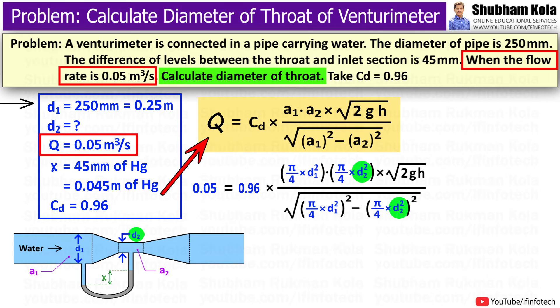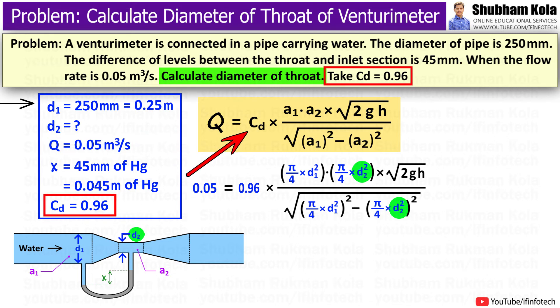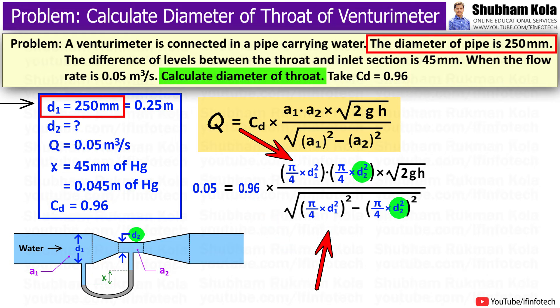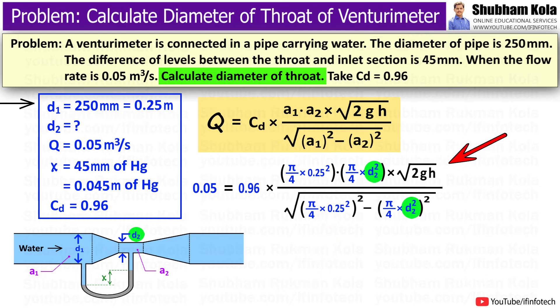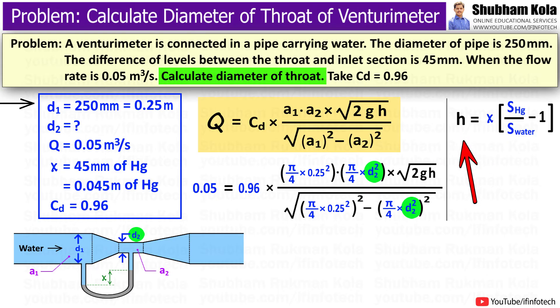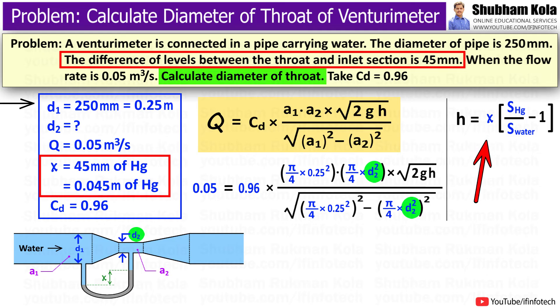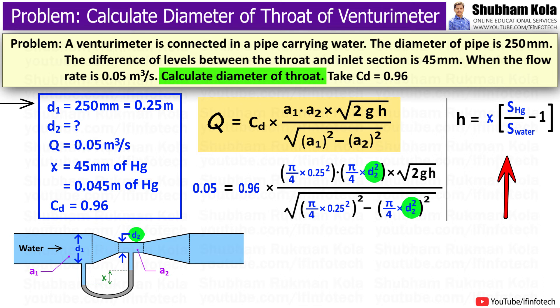In the discharge formula, the value of Q is given as 0.05 m³ per second, and the coefficient of discharge CD is 0.96. The inlet diameter d1 is 0.25 m. We need to calculate h, the difference in pressure head at the inlet and throat. h can be calculated from the manometric reading x = 0.045 m using the formula: h = x × (specific gravity of heavier fluid / specific gravity of lighter fluid) − 1.